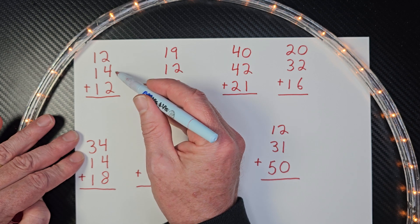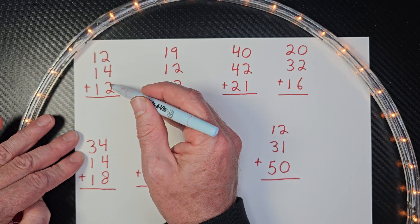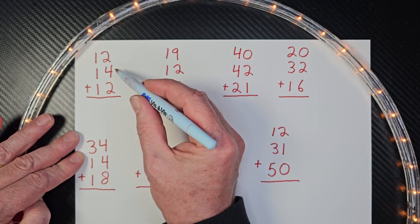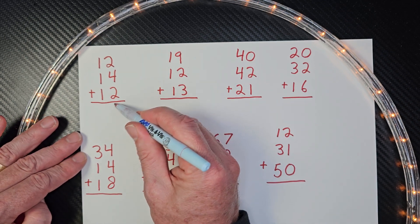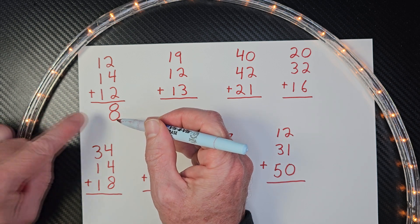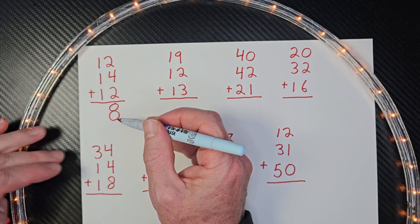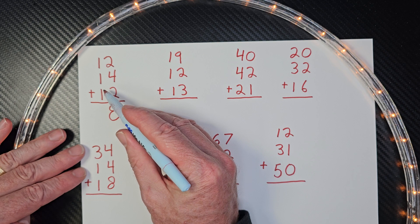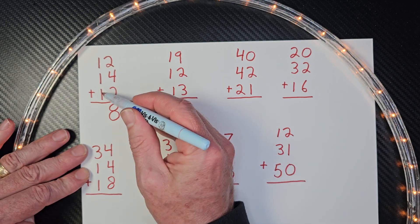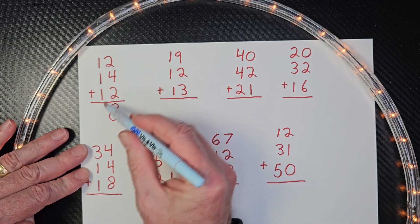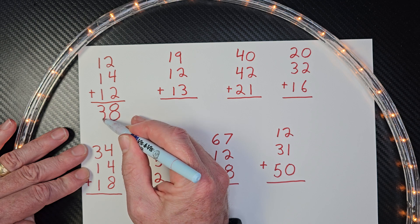Now you can add these in different ways. You could go four plus two is six and then six plus two is eight. Whatever you like. So I'm going to go ahead and put the number eight right here. I don't need to carry anything over. So I'm just all ready to start adding the tens here. I have one, two, three. So our answer for that problem is 38.